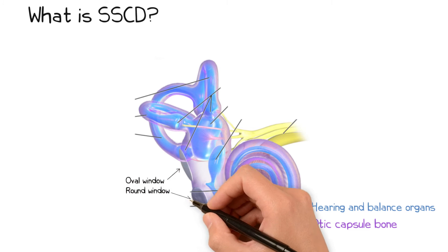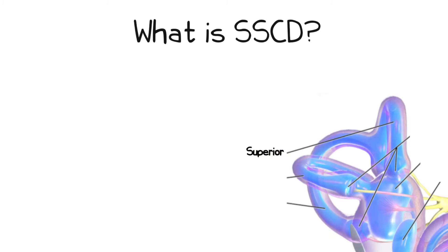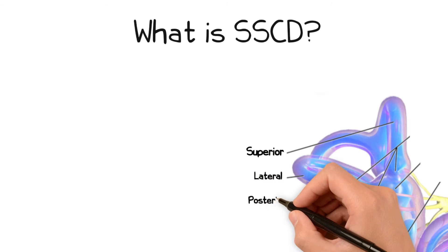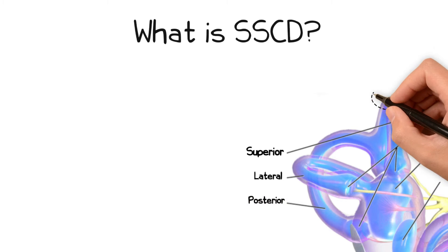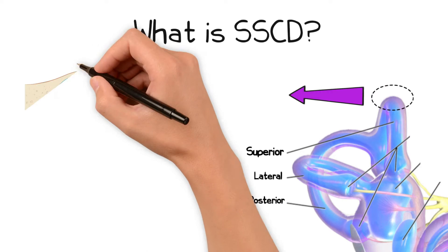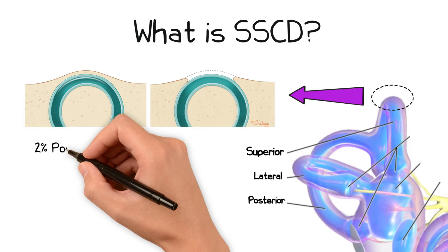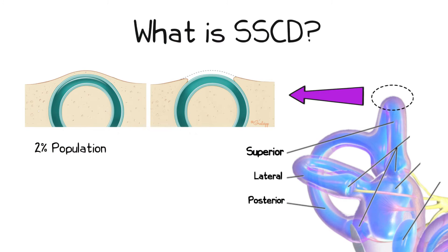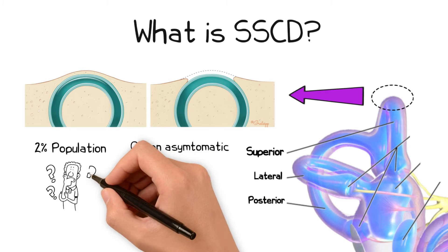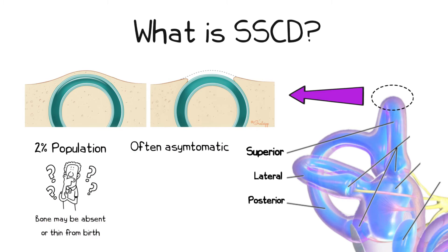The organs of balance include the otolith organs and the three semicircular canals: the superior, lateral, and posterior semicircular canals. Superior semicircular canal dehiscence is when the bone that surrounds the membranous canal is absent, and this can be seen in approximately 2% of the population and is often asymptomatic. The reason for this absence is unknown, but it is likely that the bone is absent from birth or is thin at birth and subsequently eroded over time.